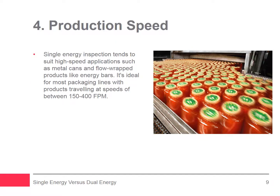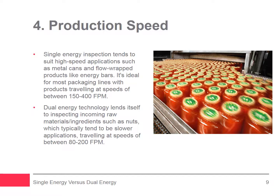Production speed also affects the choice of x-ray technology. High-speed applications such as metal cans and flow-wrapped products like energy bars tend to be more suited to single energy inspection. Single energy inspection is ideal for most packaging lines with products traveling at speeds between 150 and 400 feet per minute. In contrast, dual energy technology lends itself to inspecting incoming raw materials or ingredients such as nuts, which typically tend to be slower applications, traveling at speeds between 80 and 200 feet per minute.